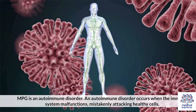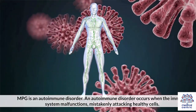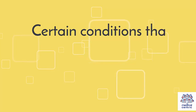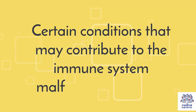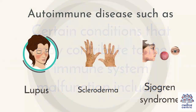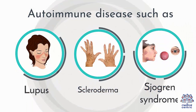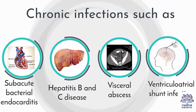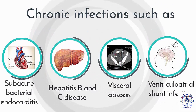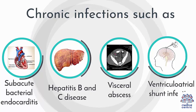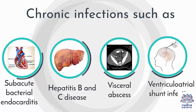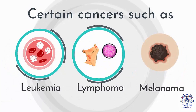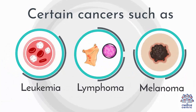Causes: MPGN is an autoimmune disorder. An autoimmune disorder occurs when the immune system malfunctions, mistakenly attacking healthy cells. Certain conditions that may contribute to the immune system malfunction include autoimmune diseases such as lupus, scleroderma, and Sjogren's syndrome; chronic infections such as subacute bacterial endocarditis, hepatitis B and C, visceral abscess, and ventriculoatrial shunt infection; and certain cancers such as leukemia, lymphoma, and melanoma.